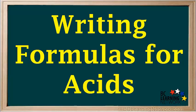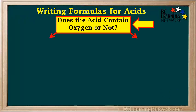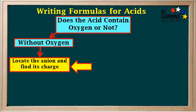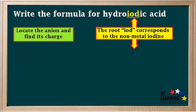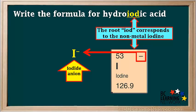We can also use the rules for naming acids to write the formula for an acid given the name. The first example is: write the formula for hydroiodic acid. The first step is to decide whether the acid contains oxygen or not. Because hydroiodic acid starts with the prefix hydro, we know it does not contain oxygen. If it's an acid without oxygen, we locate the negative ion or anion and find its charge. The root IOD corresponds to the non-metal iodine, and locating iodine on the periodic table, the anion has a charge of negative 1 — it's called the iodide ion, I⁻.